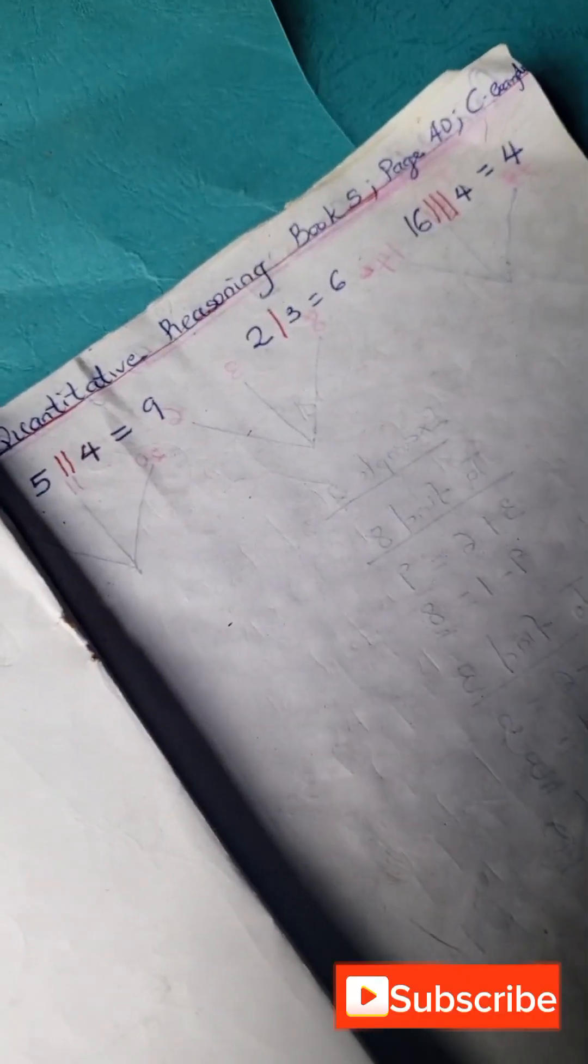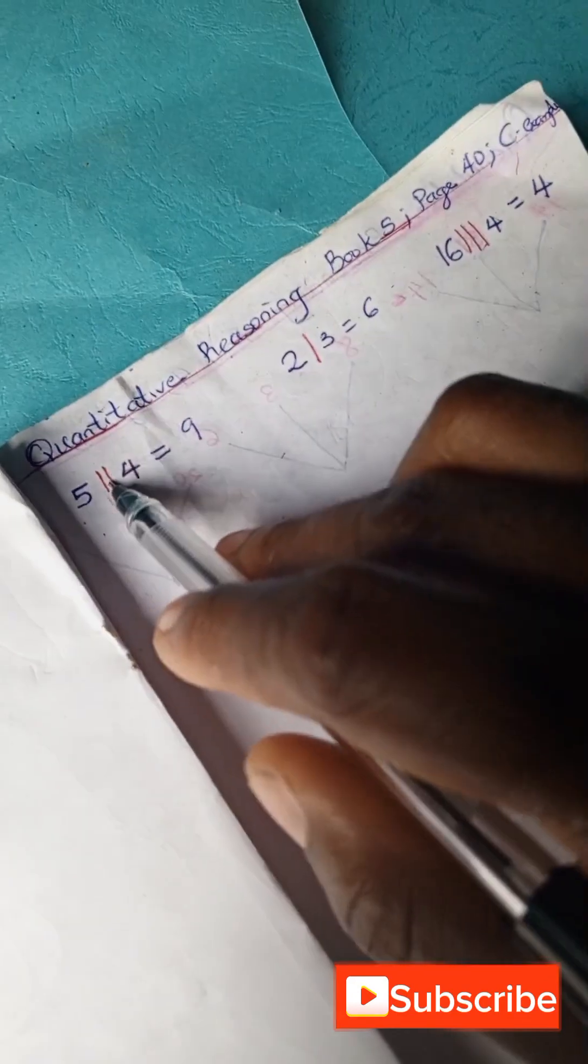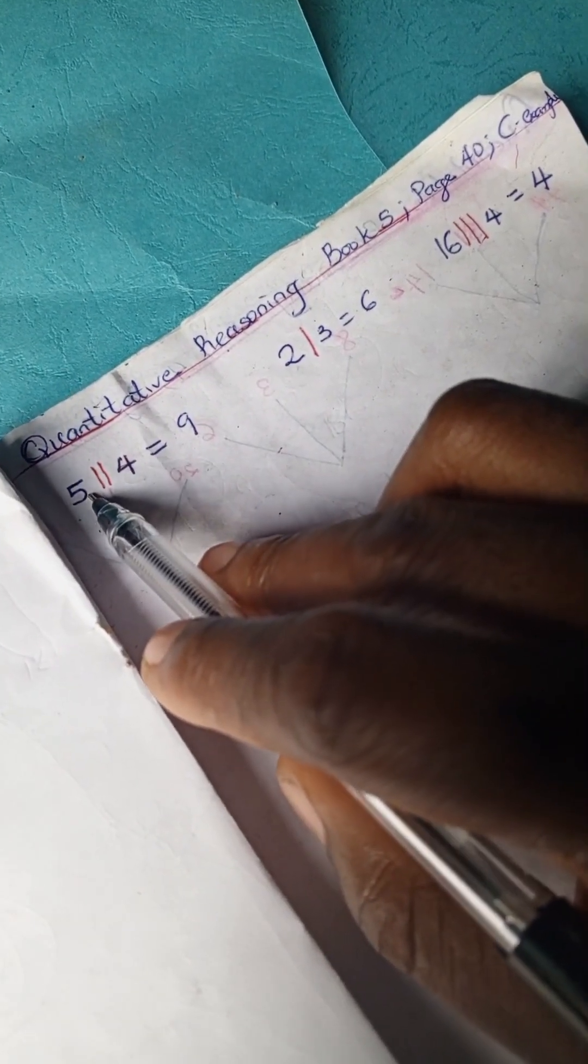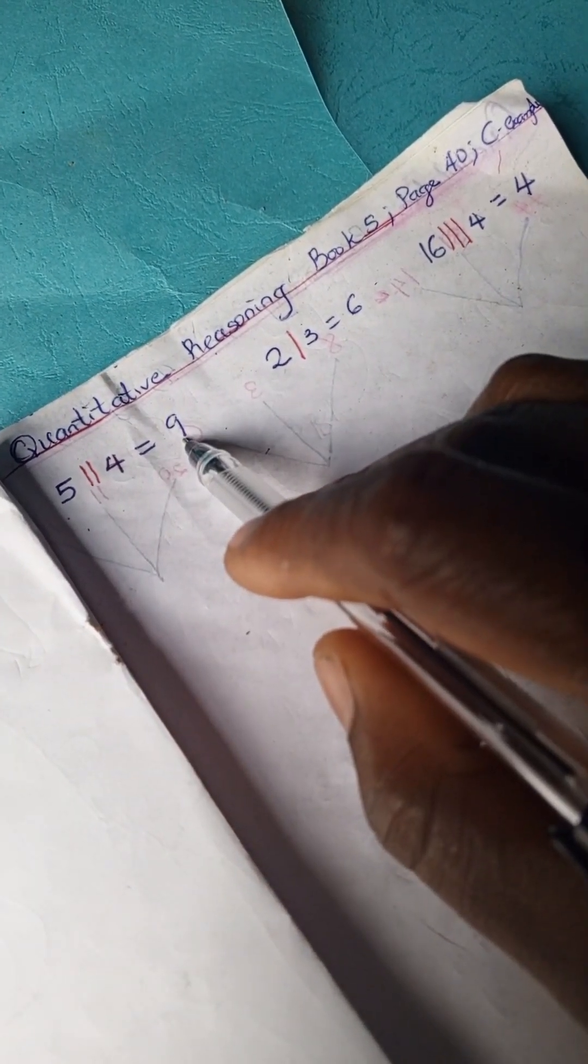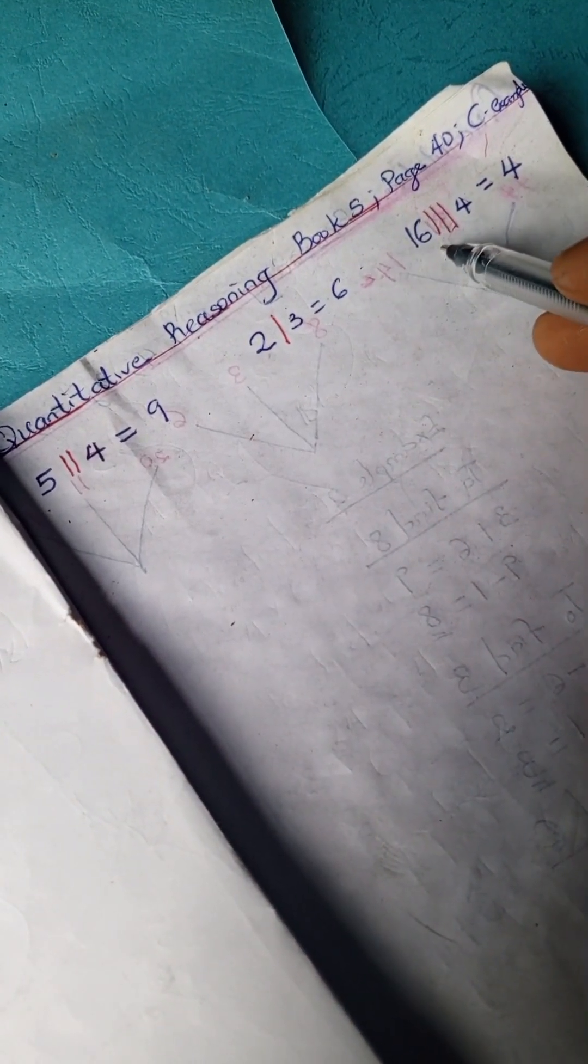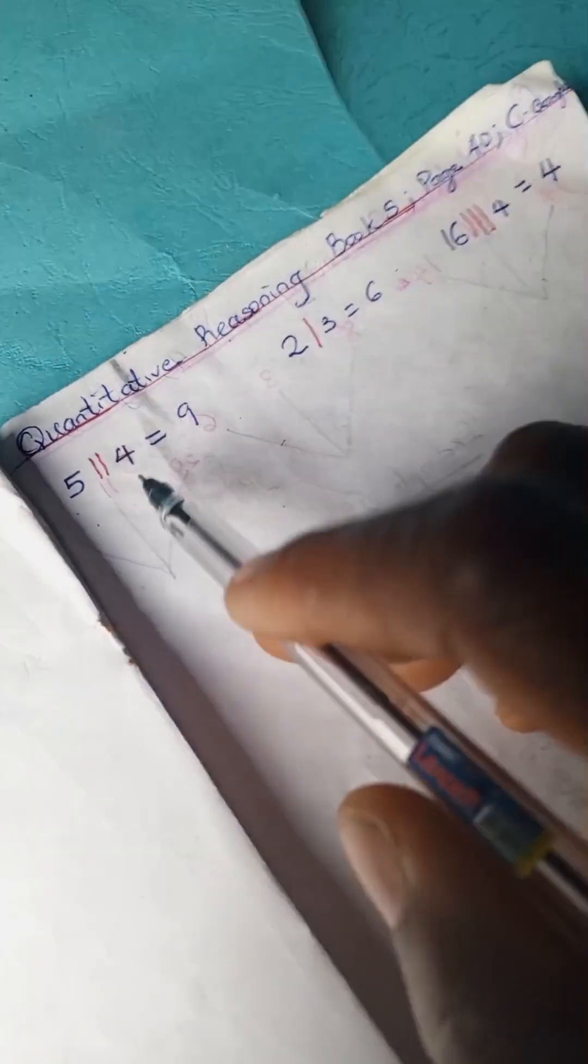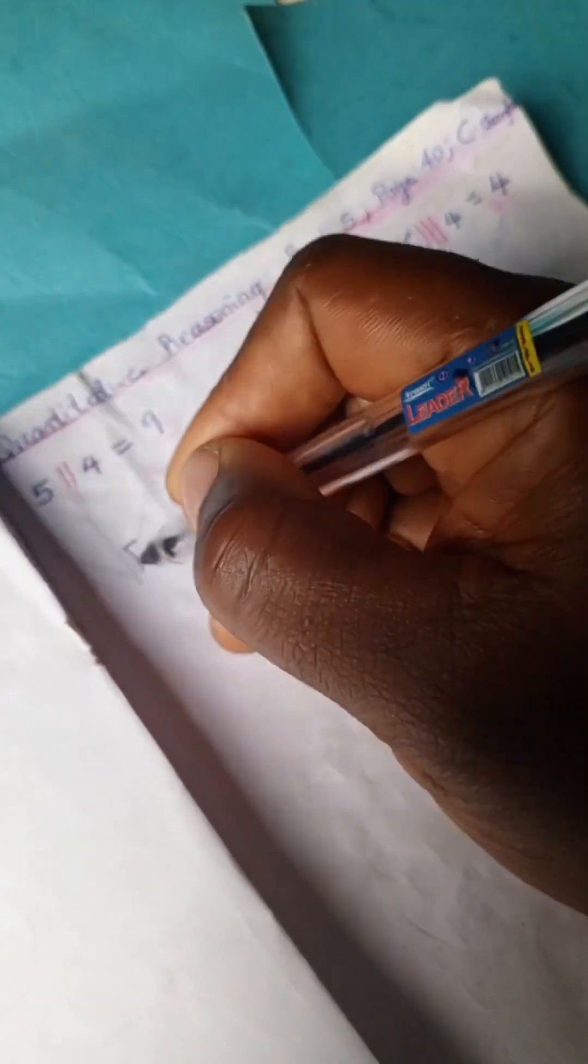If you've not subscribed to this channel, kindly do so. Thank you for joining in today. So 5 plus 4 is 9, 2 times 3 is 6, and 16 divided by 4 is 4. Now we can say that every double stroke is a plus. For example 1...